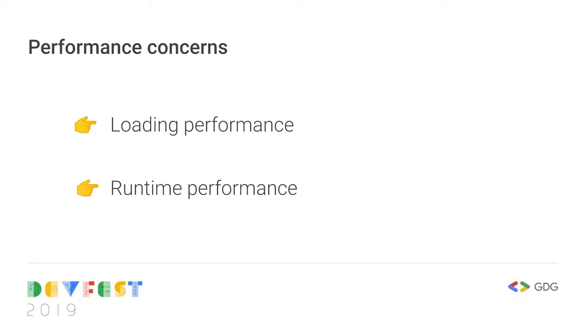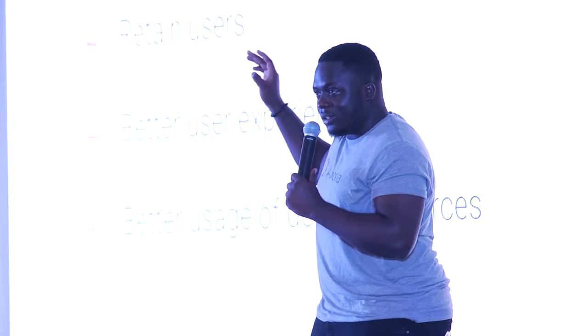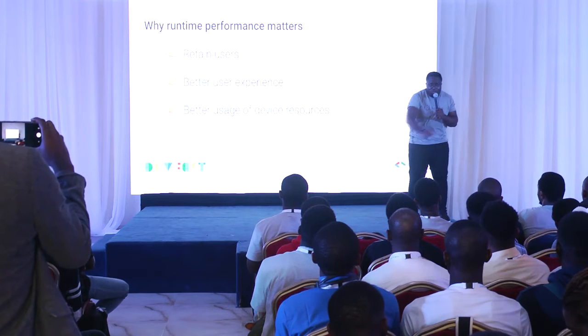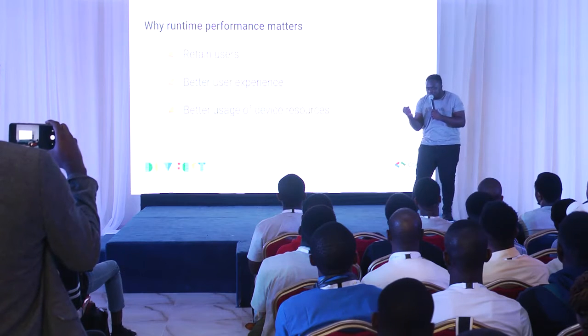So we've talked about load-time performance and runtime performance while the user is using the application. Why is runtime performance important? This is what Facebook does — they try to retain users as much as possible. If you watched F8 2019, you saw that Facebook squeezed out every single byte of CSS they could.